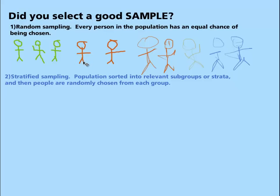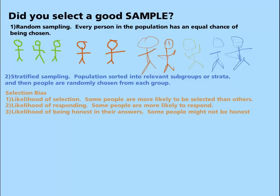Our next case I'd like to talk to you about is selection bias. And selection bias — there's three major reasons why you could have a biased selection. Bias means it may not be really representative of your population. So likelihood of selection is the first one — some people are more likely to be selected than others.